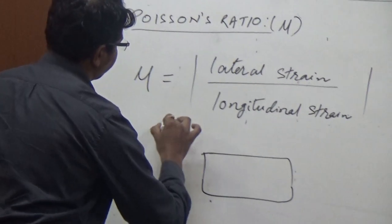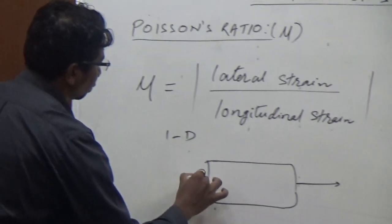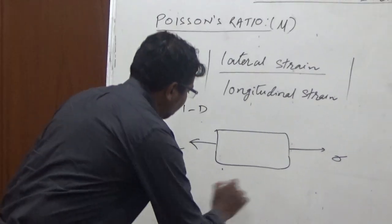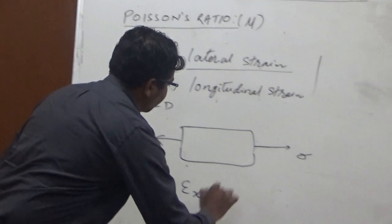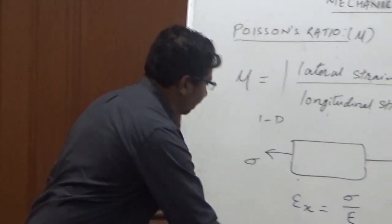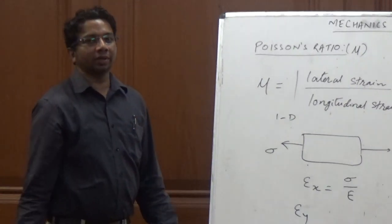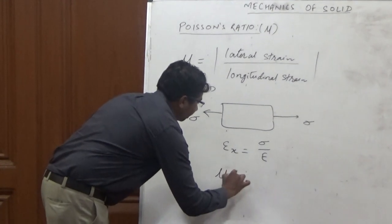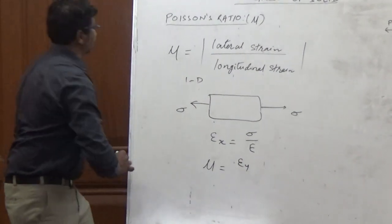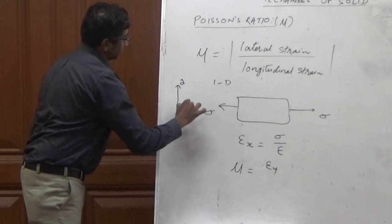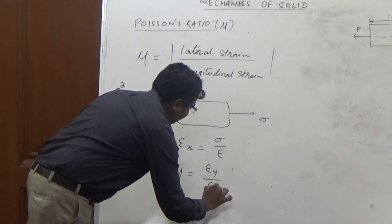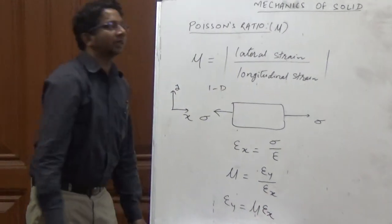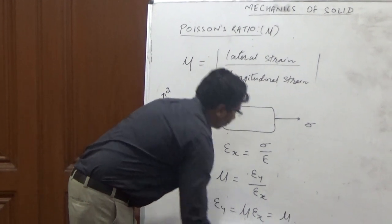Let's take a problem of one dimension. If we apply a force in the x-direction, because of this force, stress sigma is induced in that direction. The strain in the x-direction, epsilon x, is equal to sigma x divided by E (Young's modulus). What about epsilon y — the strain in the y-direction? Poisson's ratio, as we have already defined, is the ratio of the lateral strain, that is epsilon y in the y-direction, upon epsilon x in the x-direction. So epsilon y will be equal to mu times epsilon x.